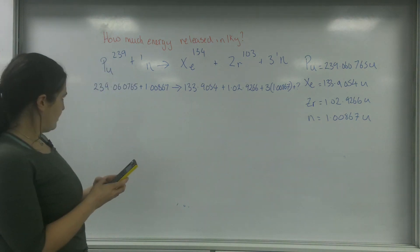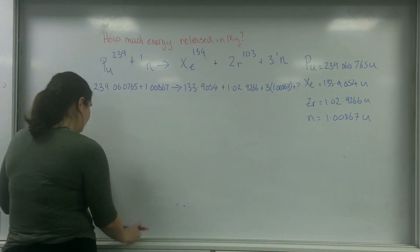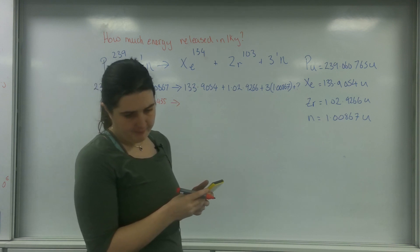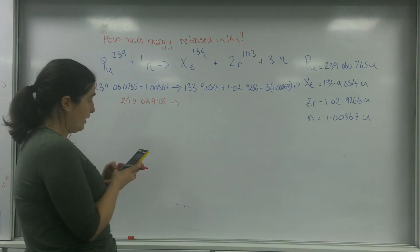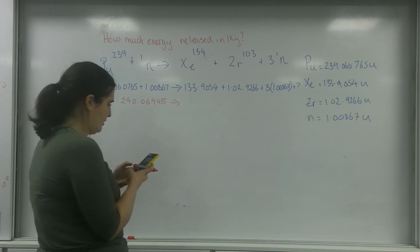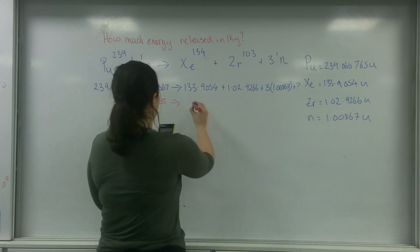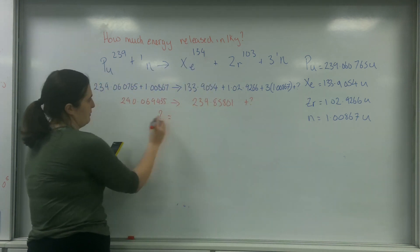So 239.060765 plus 1.00867 gives 240.06945. And this side is going to be 133.9054 plus 102.9266 plus 3 times 1.00867, which gives me 239.85801. My unknown is going to be this one take away this one.